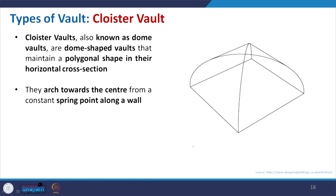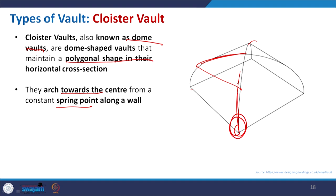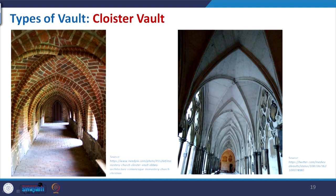Coming to the cloister vault, also known as the dome vault: it is dome-shaped with different polygonal shapes created. One arch and another arch connect - this particular portion is slightly flat and becomes even flatter toward the center. The arch goes from a spring point along the wall to a center point where they meet to create the cloister vault. In the example you can see one arch and another arch diagonally crossing each other to create this kind of vault. It is similar to the rib vault, but here the ribs are not predominant.